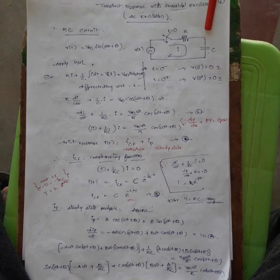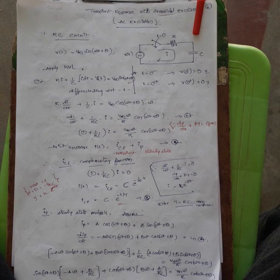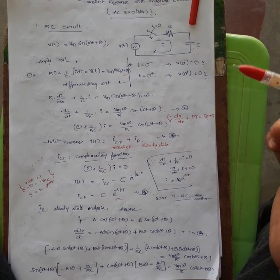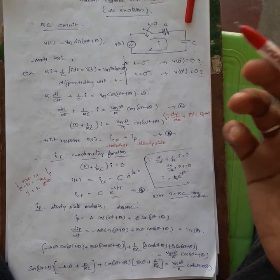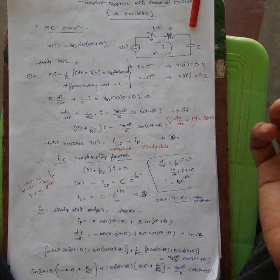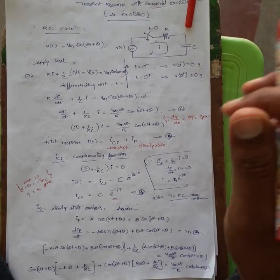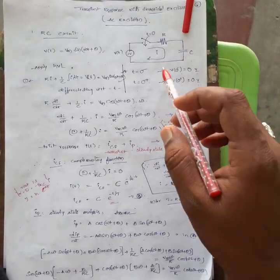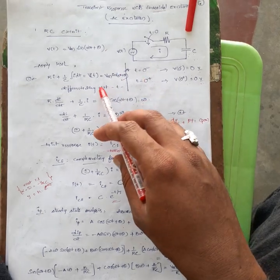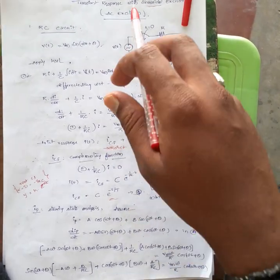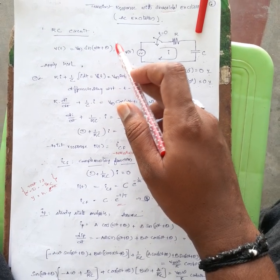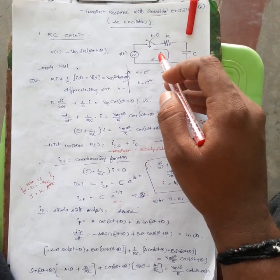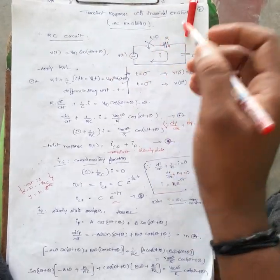Good morning, this is Vengdesh. Today we are going to discuss transient response with sinusoidal excitations. We already know DC excitation and transient responses — RL circuit, RC circuit, and RLC circuit with DC excitation. Here, the source is different: it is an AC source, that is simply Vm sin(ωt + θ), where ω is angular frequency and θ is phase angle.